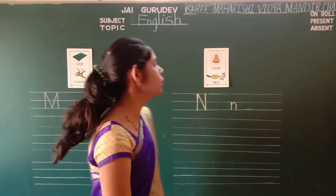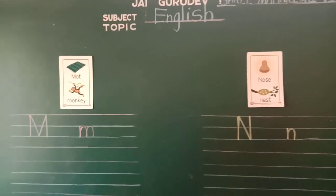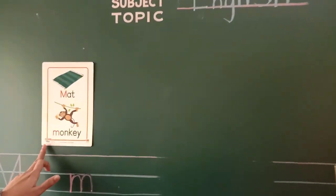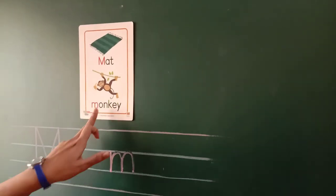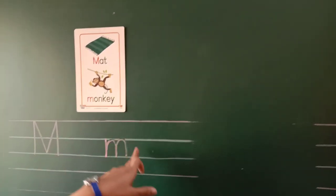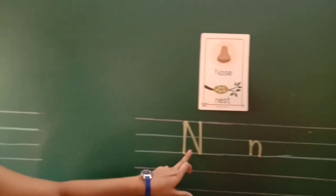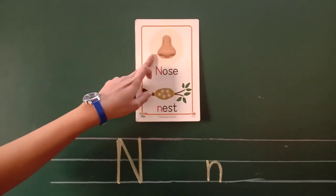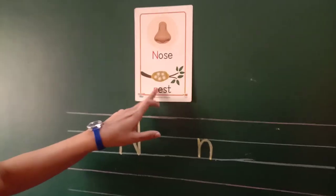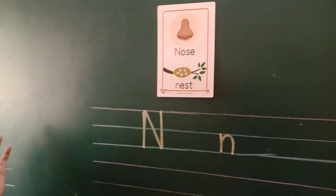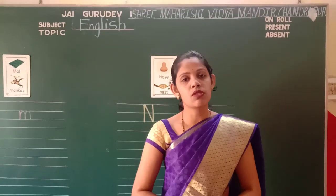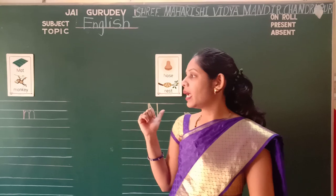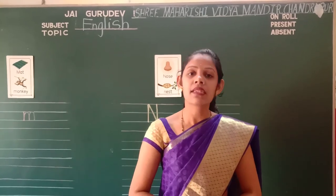Today we are going to learn two words: M for mad, M for monkey. And then N — N for nose, N for nest. These two letters, M and N, we are going to draw the pictures of mango and nest.